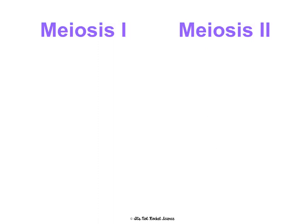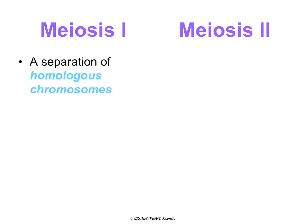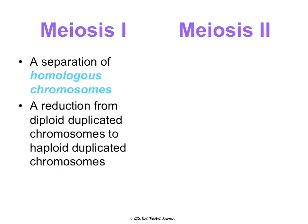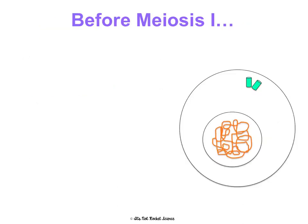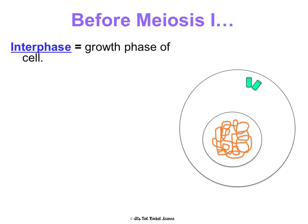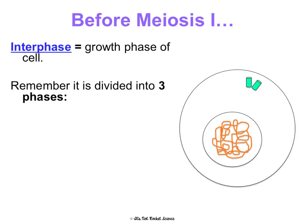Meiosis is very similar to mitosis, but we're going to go through PMAT twice — in meiosis I and meiosis II. The overall goal of meiosis I is to separate those homologous chromosome pairs — separating the chromosomes from mom and dad — and reduce from diploid-duplicated chromosomes to haploid-duplicated chromosomes. Then in meiosis II, we're going to separate the sister chromatids, and the duplicated haploid daughter cells from meiosis I are going to divide into individual chromosomes.